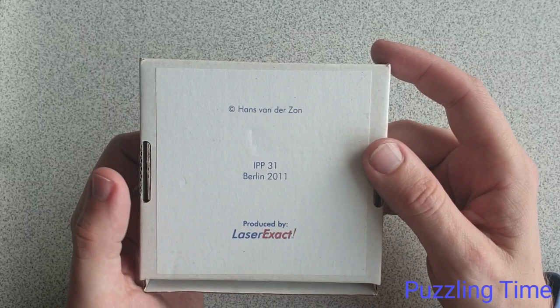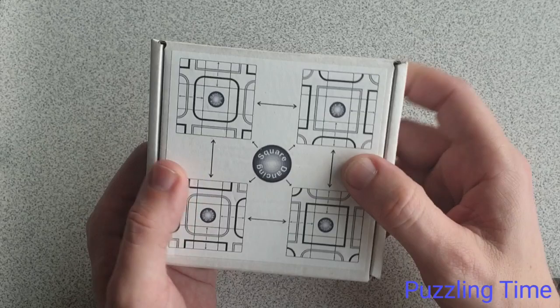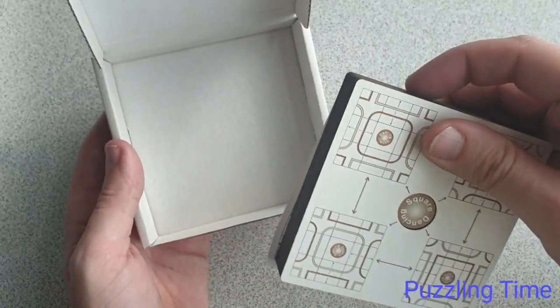If we open the puzzle up here's the actual puzzle. We have a little leaflet that comes with it and it says Square Dancing is a slide puzzle with nine pieces. Remove the middle piece with the button so you can slide the other pieces.